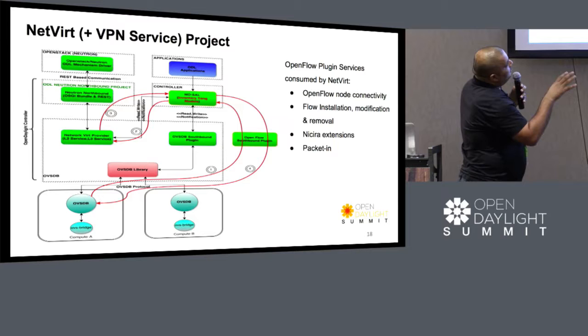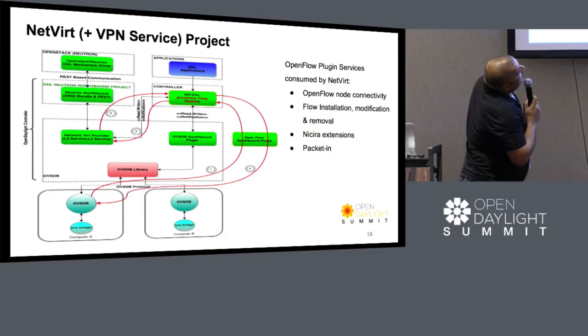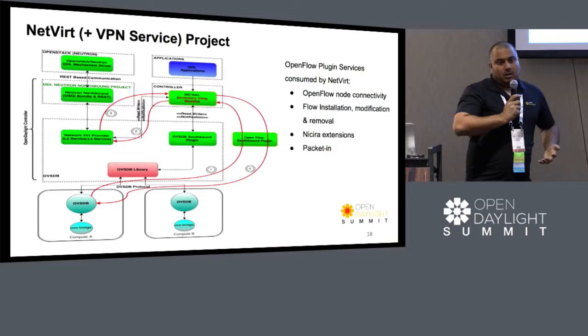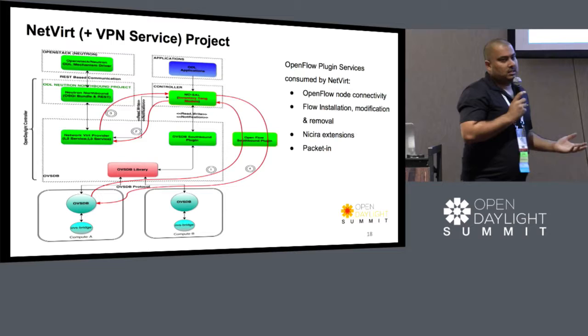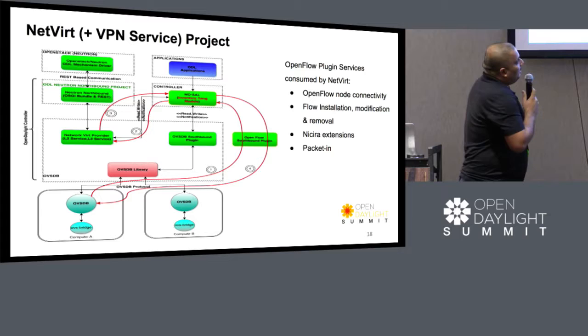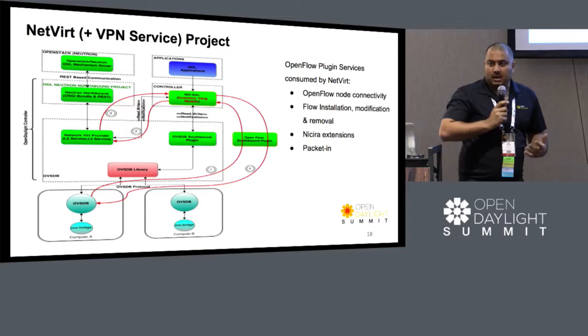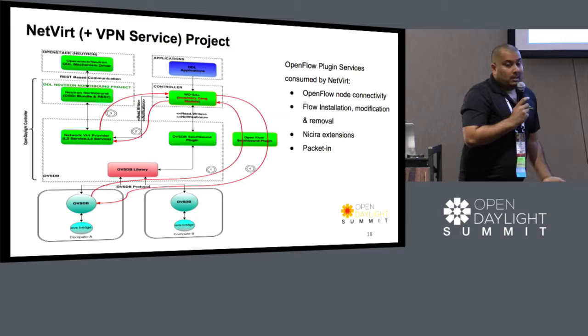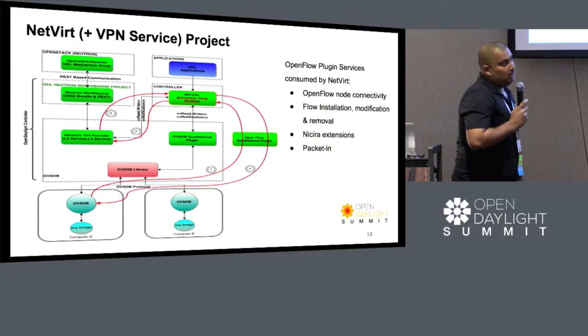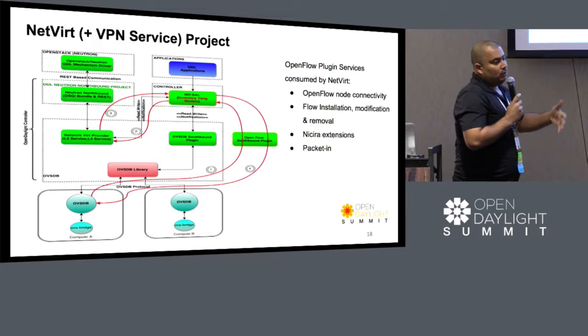This is similar to the generic consumption model shown earlier. Network also provides flow installation via OVSDB, but that does not provide all the goodness that the OpenFlow plugin provides — like reactiveness and reactive programming. That's where network decided to use the OpenFlow plugin. In the recent version of network, they use packet-in and reactive programming for responding to DSCP services and similar needs, which is why OpenFlow is critical for their flow programming.